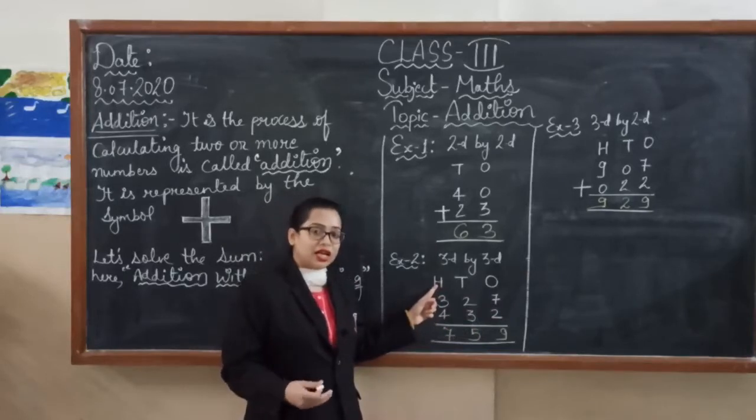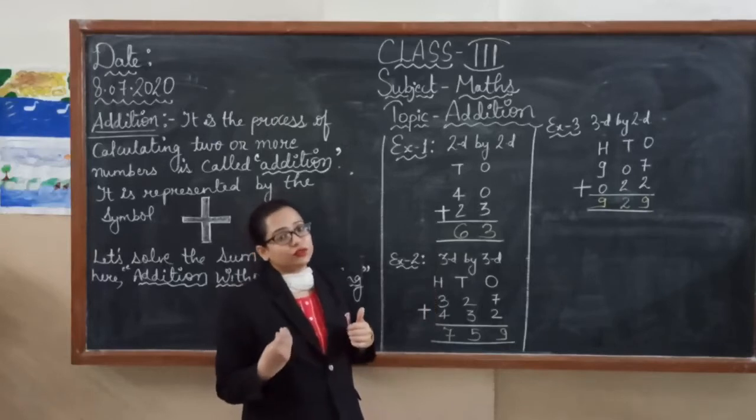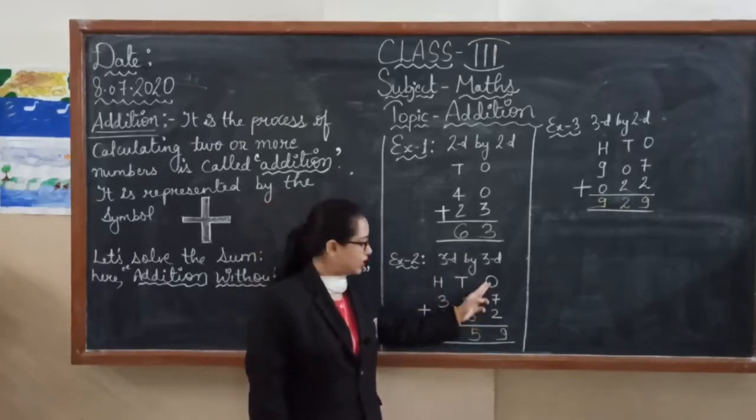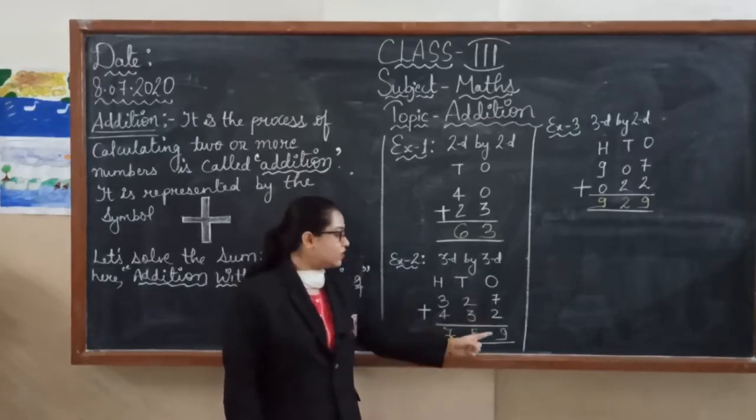When you start addition, always we have to start from the one's place. Seven plus two. After seven, two more numbers we have to count. Seven plus two, eight, nine. So here we will write nine.